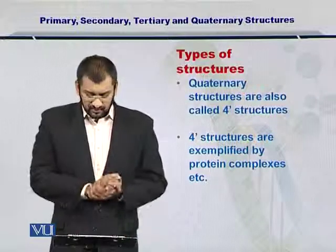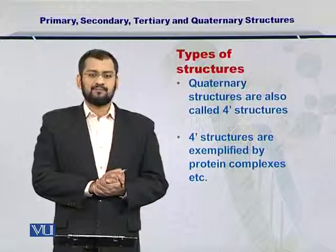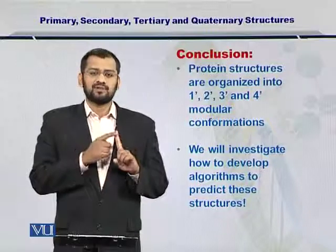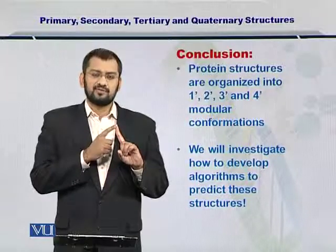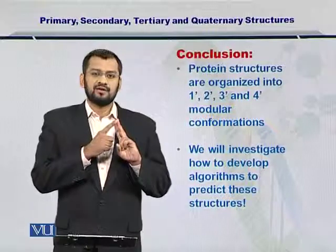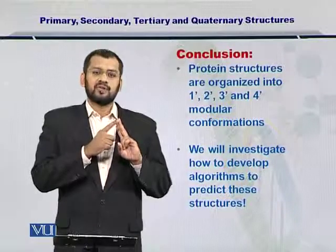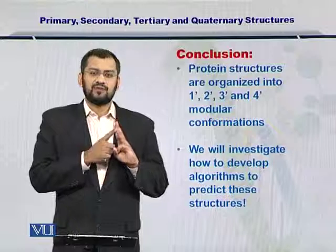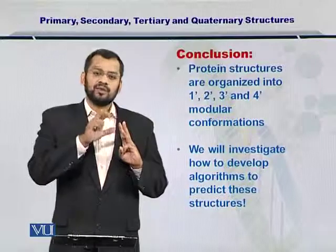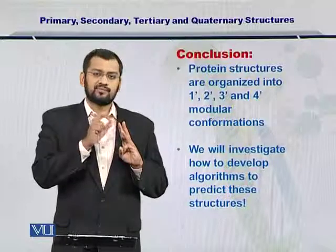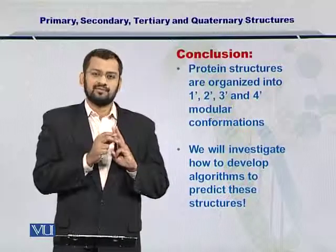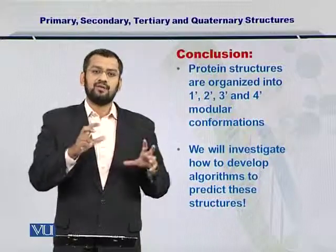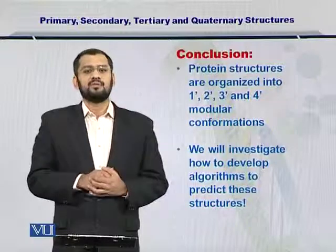Formally, quaternary structures are also called four prime structures. So now we know the four different types of structures: the one prime structure, that is the protein's amino acid sequence; the two prime or secondary structure, which is the substructures formed out of the amino acids; the three prime or tertiary structure, formed when the two prime structures are combined in various combinations; and the quaternary structure, which comes about when the various three prime structures come together — for instance, in protein complexes.